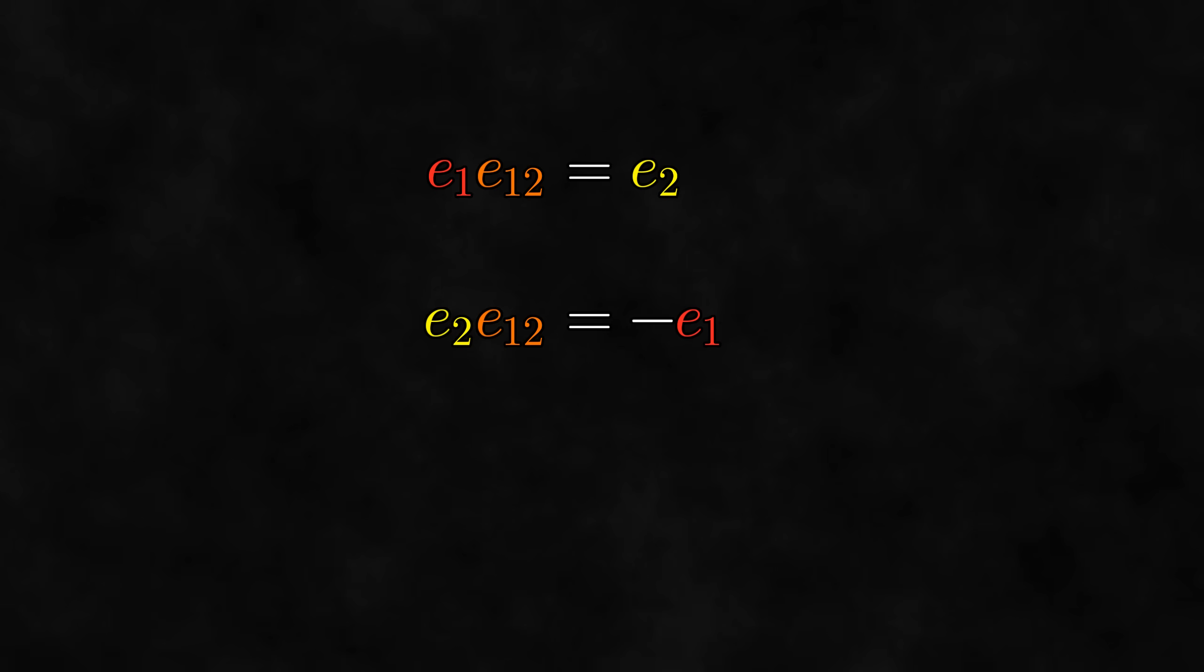Another product we could try is e3 times e12. In this case, no matter what we do, there is no basis vector squared here. However, we could at least swap a couple times to sort the basis vectors. I'll talk about this a little more later, but similar to how e1 e2 is equal to e12, e1 e2 e3 is equal to e123. So our final answer here is e123.